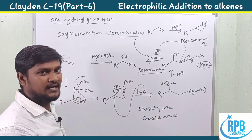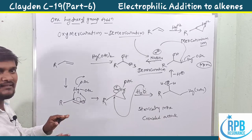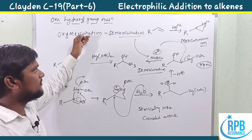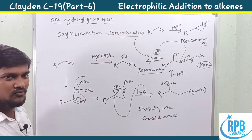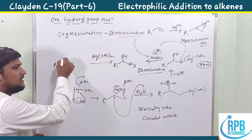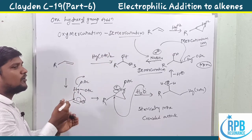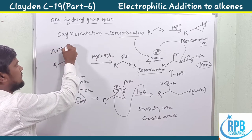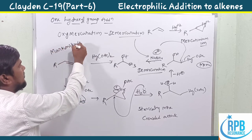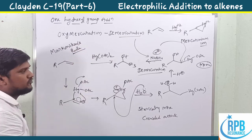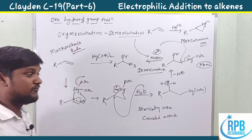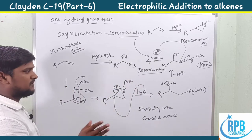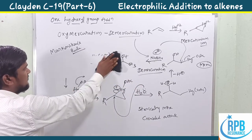The overall process is called oxymercuration–demercuration. The demercuration reagent is NaBH₄, a hydride transfer reducing agent. The OH group is added to the more substituted side, so this reaction follows Markovnikov's rule.